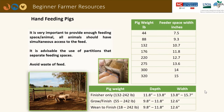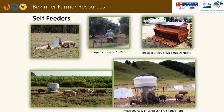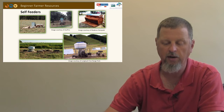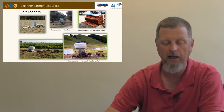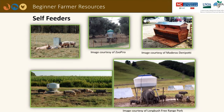Pig feeders must be sufficiently sized so that all pigs can eat quietly and not waste food. It's very important to provide enough feeding space per animal so all animals have simultaneous access to the feed. It is advisable to use partitions that separate the feeding spaces and prevent fighting. Self-feeders are very convenient for pasture hogs — the pigs have a consistent supply of feed but are unable to waste or spoil it. A general rule of thumb is that one-third of the bottom of the feeder should be covered in feed. It is important that feeding holes are provided with lids to limit access of birds, rodents, and other wild animals.